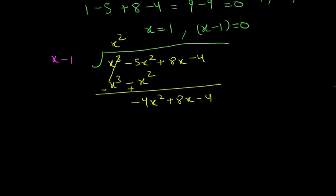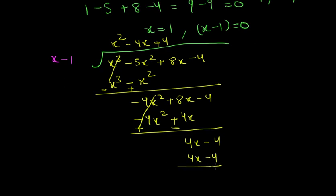Now we will multiply it by minus 4x. Multiplying by minus 4x we get minus 4x² plus 4x. This becomes 4x minus 4. If I multiply it by 4 we get 4x minus 4, which means the remainder is 0.